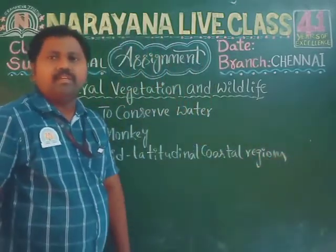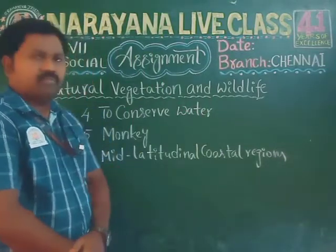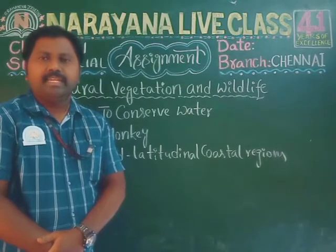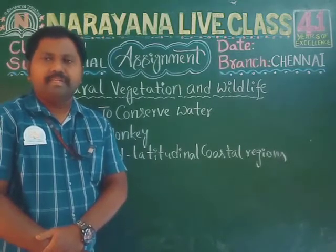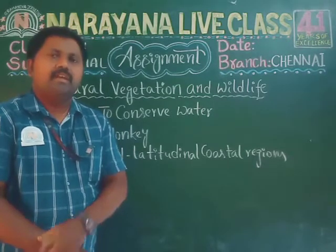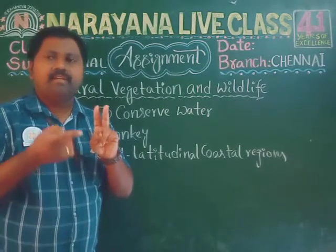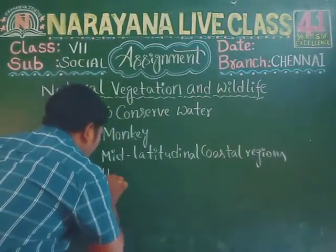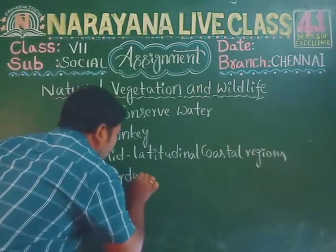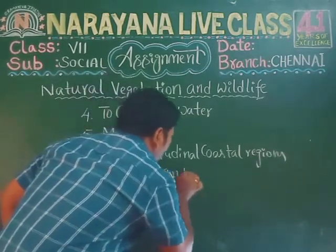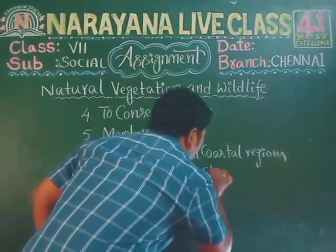Next, let's take the seventh question. Name the two types of trees found in the temperate evergreen forest. The answer is hardwood trees and softwood trees. So the seventh question answer is hardwood trees and softwood trees.